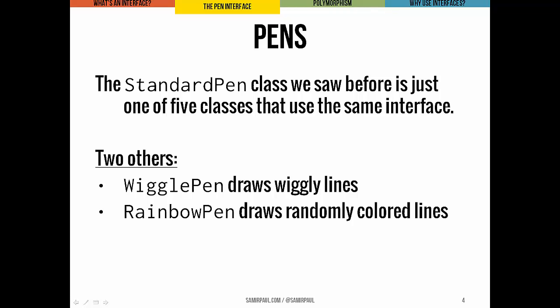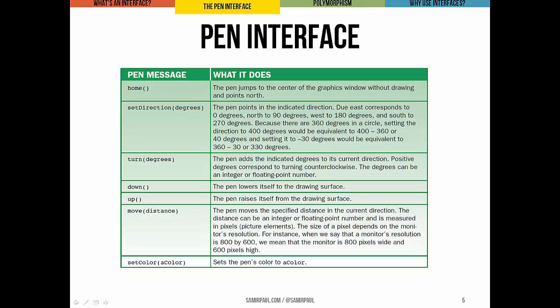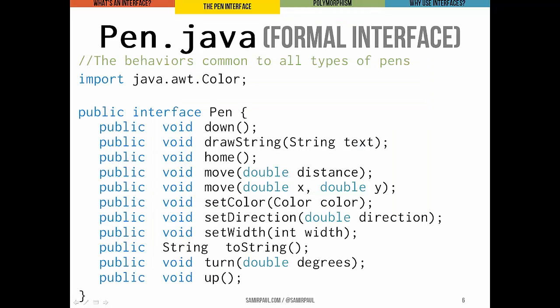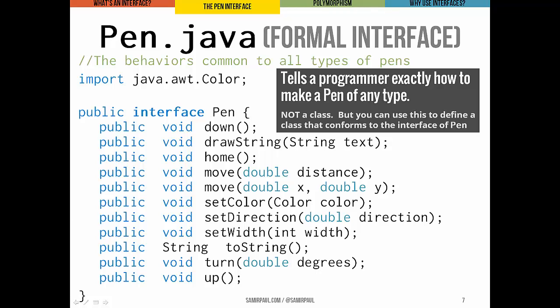Last lecture you saw a table of methods for a standard pen. Now we'll think of this as essentially the interface for a pen. Java actually provides a more formal way to describe an interface, and you can see it in an example here, pen.java. This is an actual interface — note we use the word 'interface' where you might have expected the word 'class'. The code is really simple: it's just the signatures of the different methods followed by semicolons. This interface tells programmers all the information they need to use pens of any type — standard pens, wiggle pens, rainbow pens, or any other kind of pen that uses this pen interface.